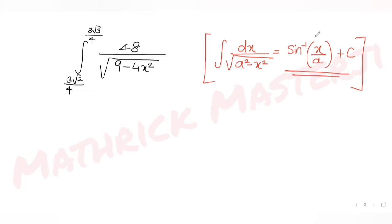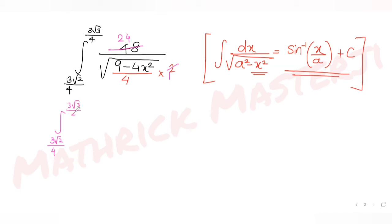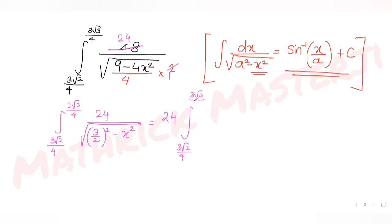With x² you should not have any coefficient, so I divide the expression inside the root by 4. Dividing inside the root by 4 means dividing by √4 = 2, so outside I multiply by 2. This gives 48 × 2 / 2 = 24 out front, and inside the root we get √((3/2)² − x²). So the integral becomes 24 times ∫dx/√((3/2)² − x²) with the same limits.